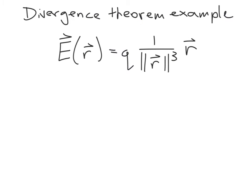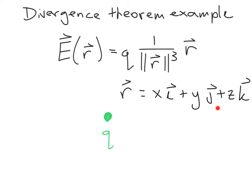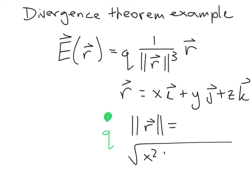For this divergence theorem example, we will consider the flux of an electrostatic field E. This electrostatic field is due to a point charge of charge Q centered at the origin. E of position vector R gives the field at a position R due to this charge at the origin. Recall that R is the position vector xi plus yj plus zk, and the magnitude of R is the square root of x squared plus y squared plus z squared, which equals rho, the distance from the origin in spherical coordinates.